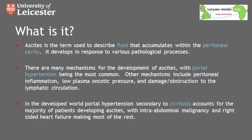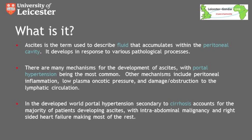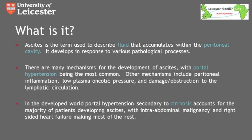What is ascites? The term ascites is used to describe the fluid that can accumulate within the peritoneal cavity. It can develop in response to multiple pathological processes, although the most common one is that of portal hypertension. Other mechanisms include peritoneal inflammation from infections or malignancy, hypoalbuminemia and low plasma oncotic pressure, and damage or obstruction to the lymphatic circulation, thereby impairing reabsorption of this fluid.